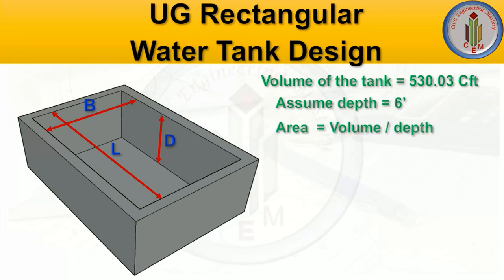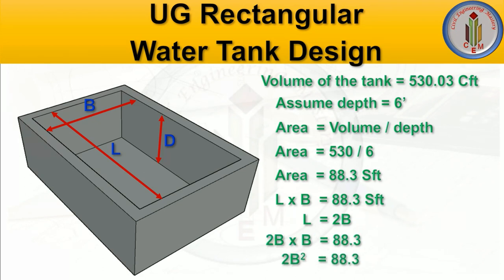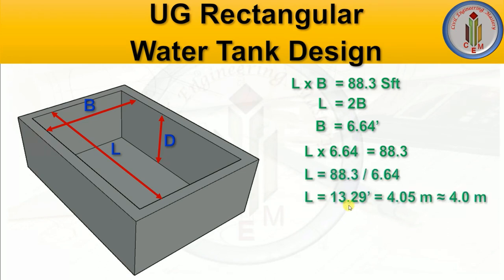Area equals volume divided by depth. Volume is 530 cft and depth is 6 feet, so area equals 88.3 square feet. We write this as length multiplied by breadth equals 88.3 sq ft. Assuming L equals 2B, we can solve for B: B is 6.64 feet. Substituting back, L is 13.29 feet.